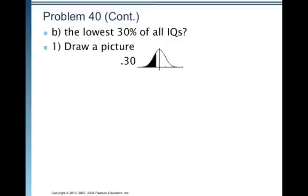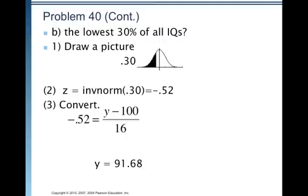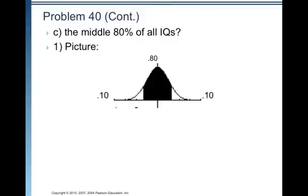The lowest 30% of all IQs, we draw a little picture. Lowest 30% means we want the Z score that cuts off the bottom 30%. So, we do inverse normal of just 0.30 and we get negative 0.52, and then we convert to a Y value, an IQ score. So, negative 0.52 equals Y minus 100 over 16. And so, we're going to multiply both sides by 16 and then add 100 and we get Y equals 91.68.